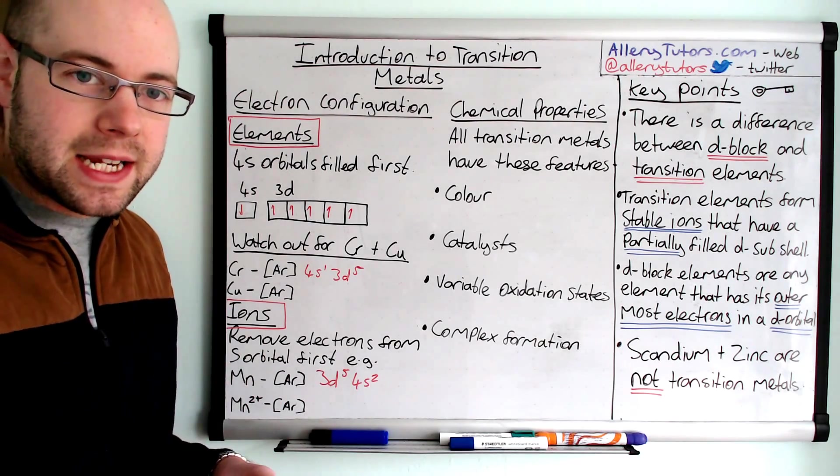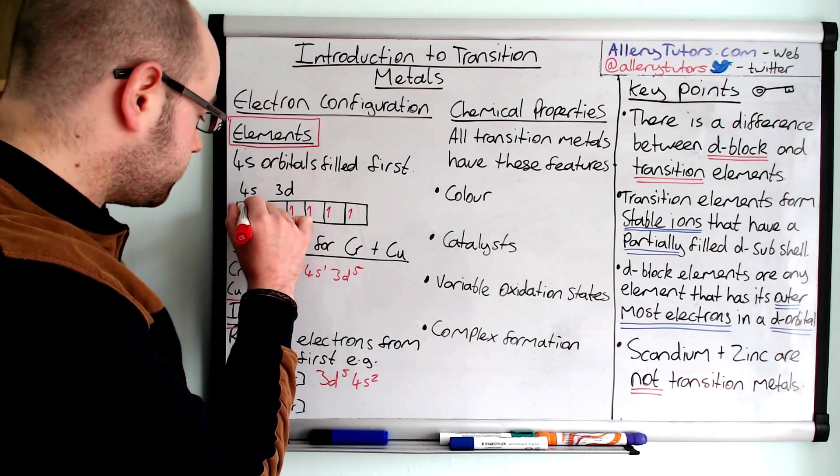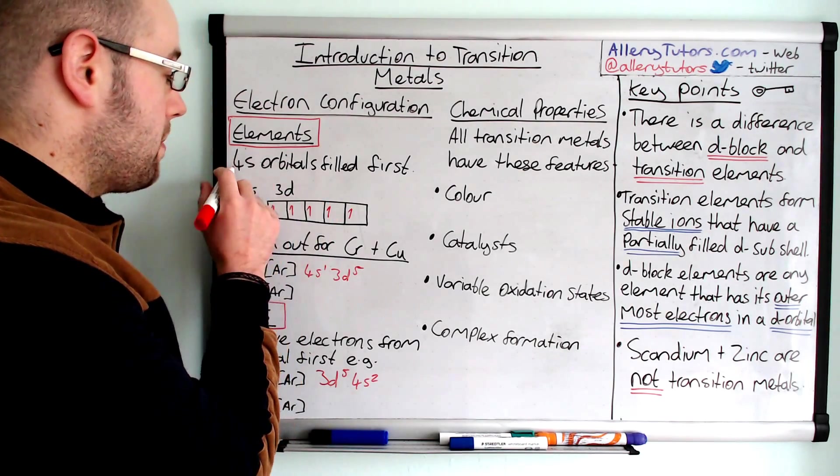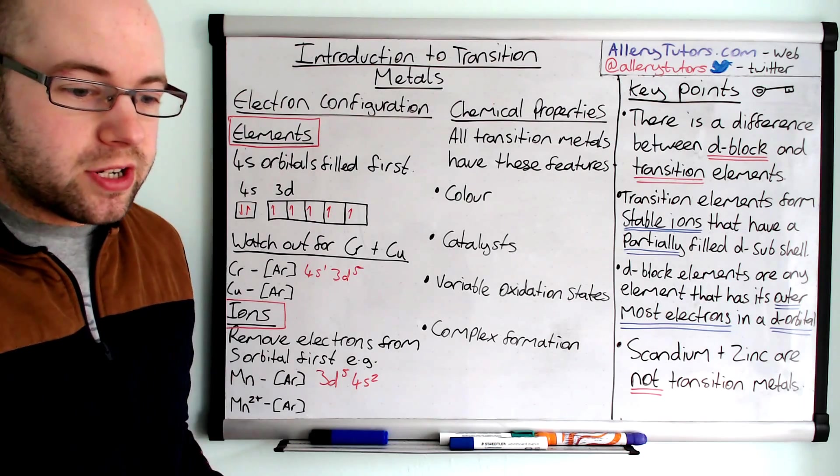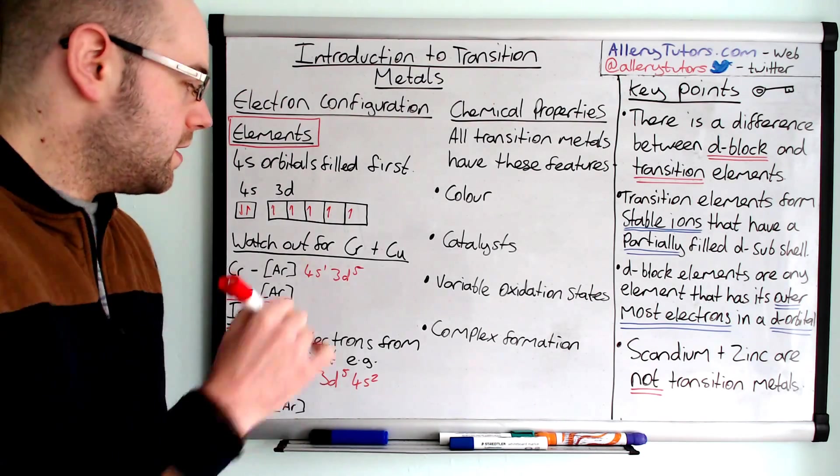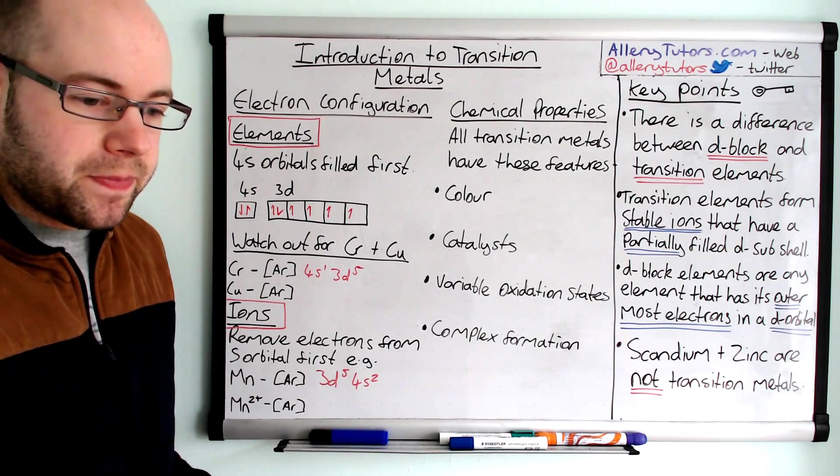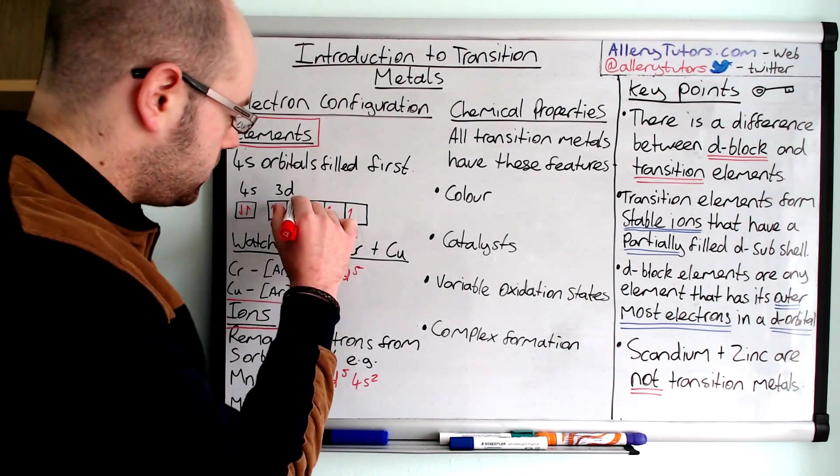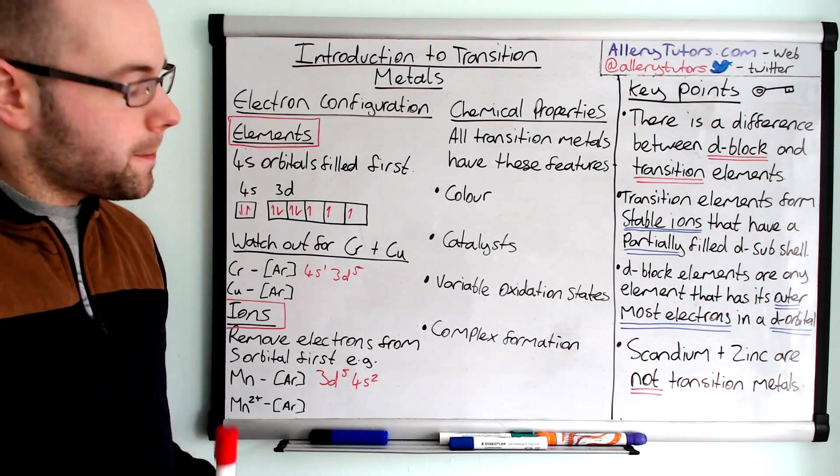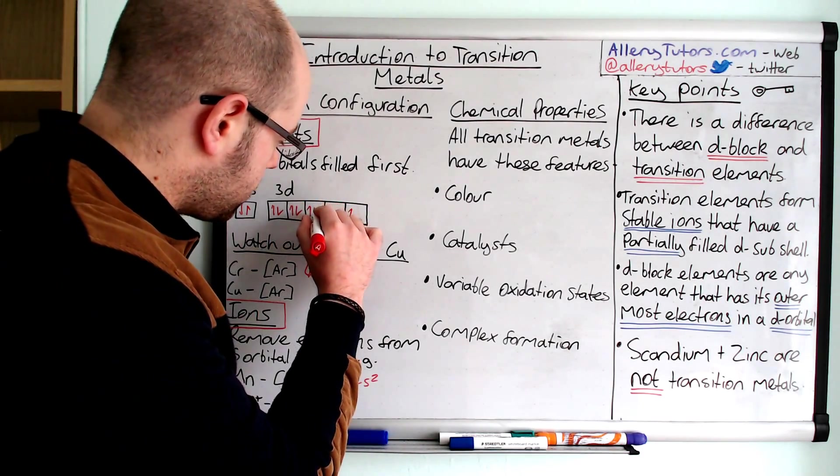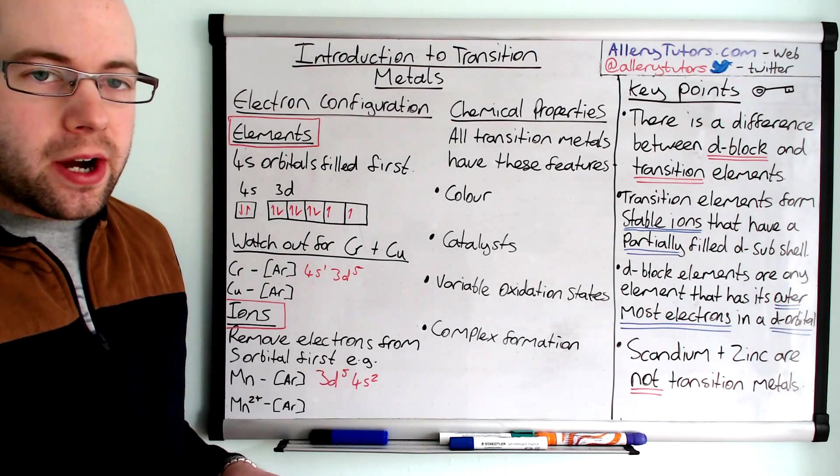If we go to the next element, which is manganese. Now, manganese will fill up this electron here first. Remember, s orbitals will fill up first. So manganese has that configuration. The next one along is iron. And iron would then start and fill up the d electron. The next one after that is cobalt. And again, cobalt would have that configuration. The next one along is nickel. Nickel will have this configuration here.